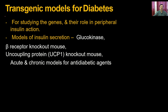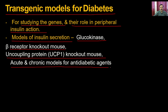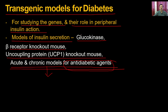Transgenic models for diabetes are useful for studying genes and their role in peripheral insulin functions and serve as models of insulin secretion. Glucokinase and beta-receptor knockout mice, or uncoupling protein (UCP) knockout mice, provide acute as well as chronic models for screening anti-diabetic agents. These knockout mice develop diabetes at a particular stage of their life cycle, allowing screening of anti-diabetic compounds.